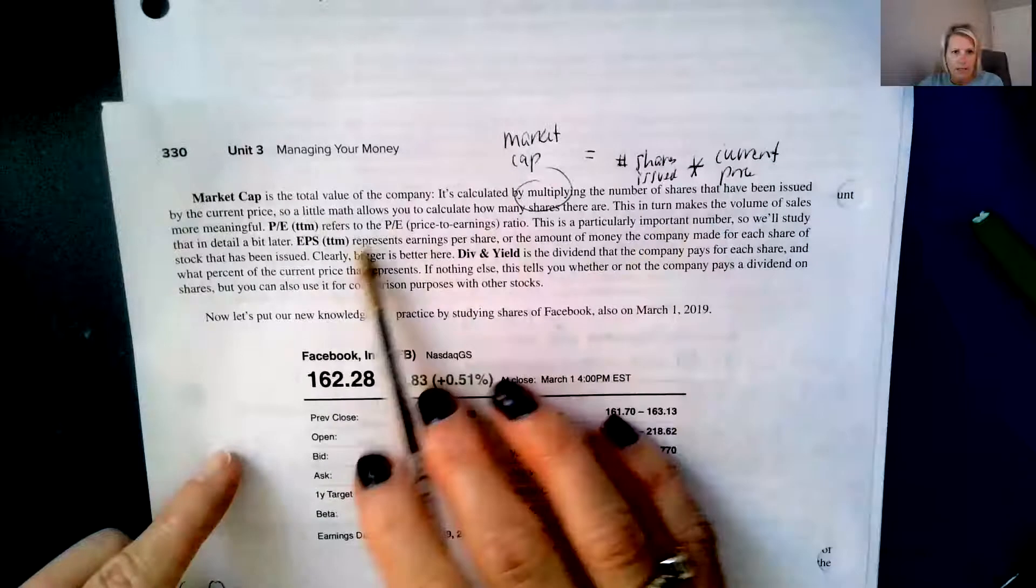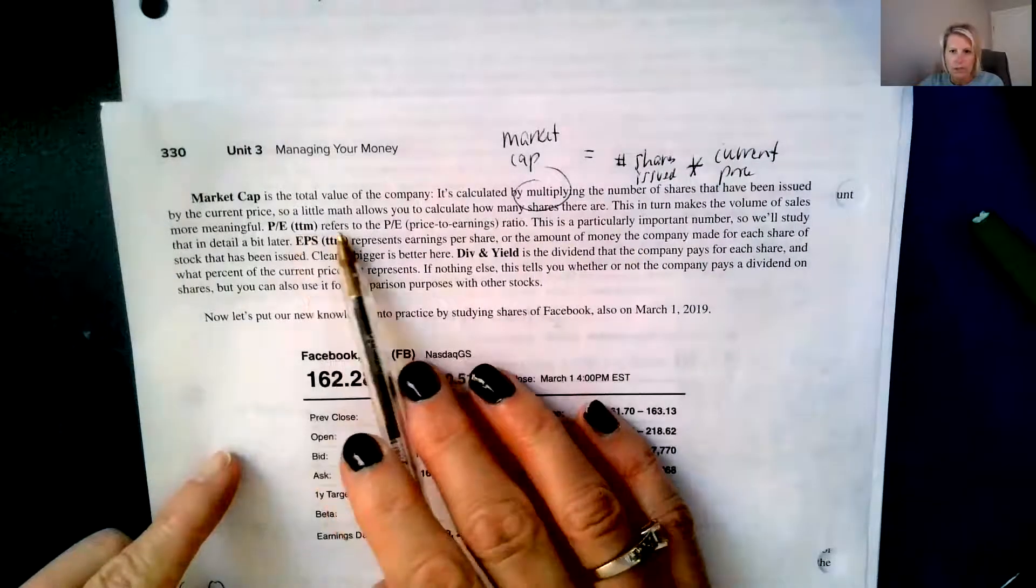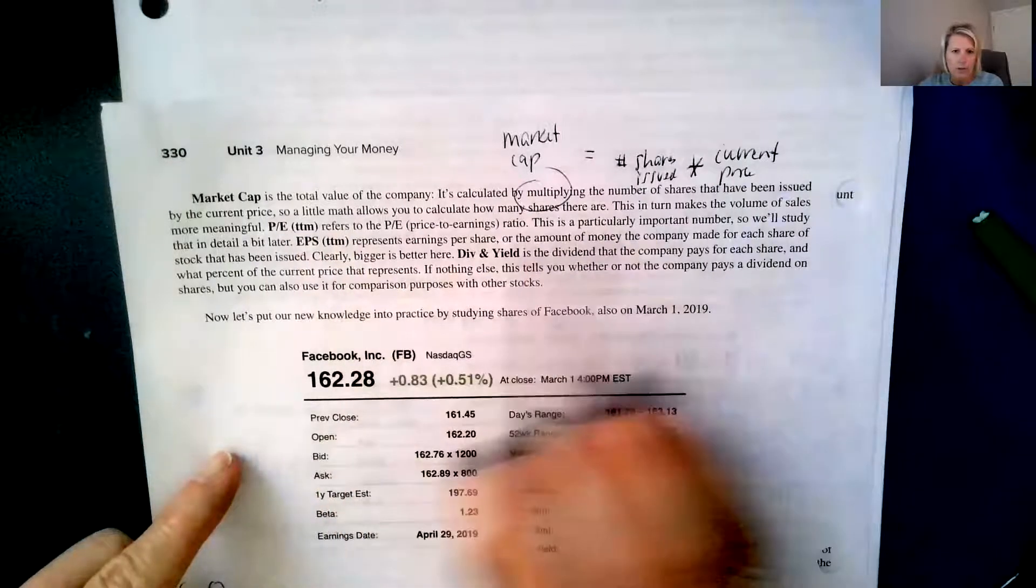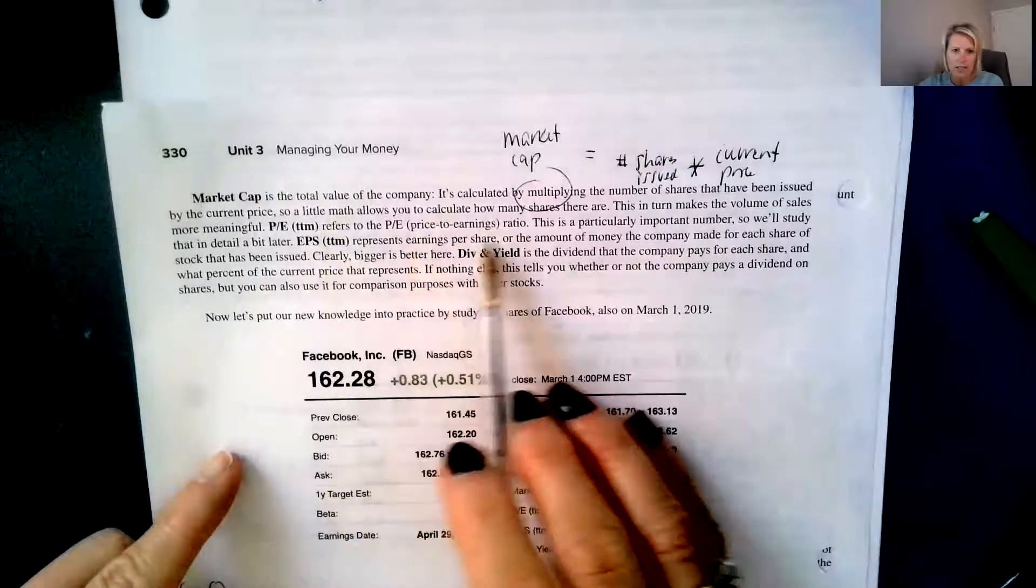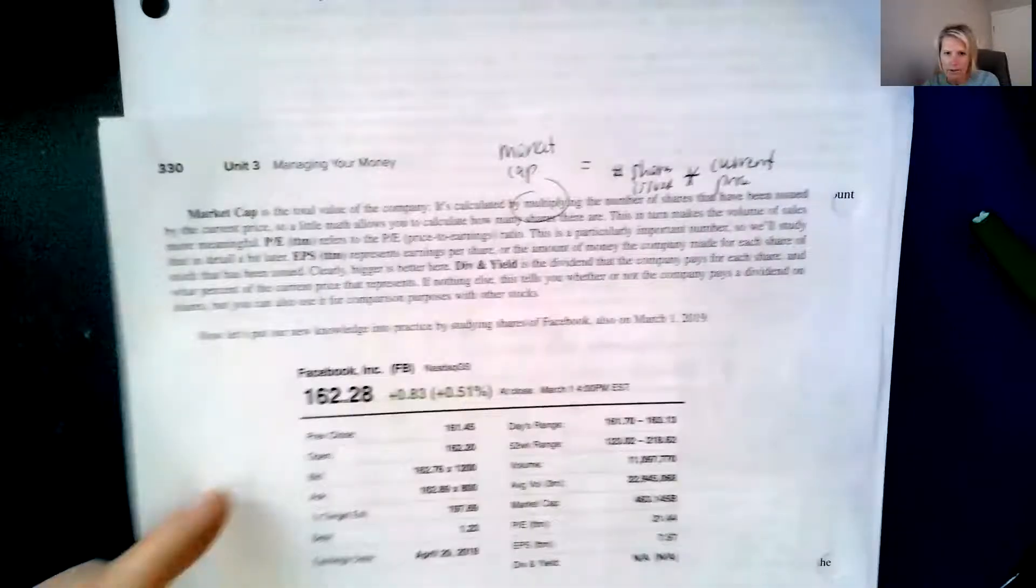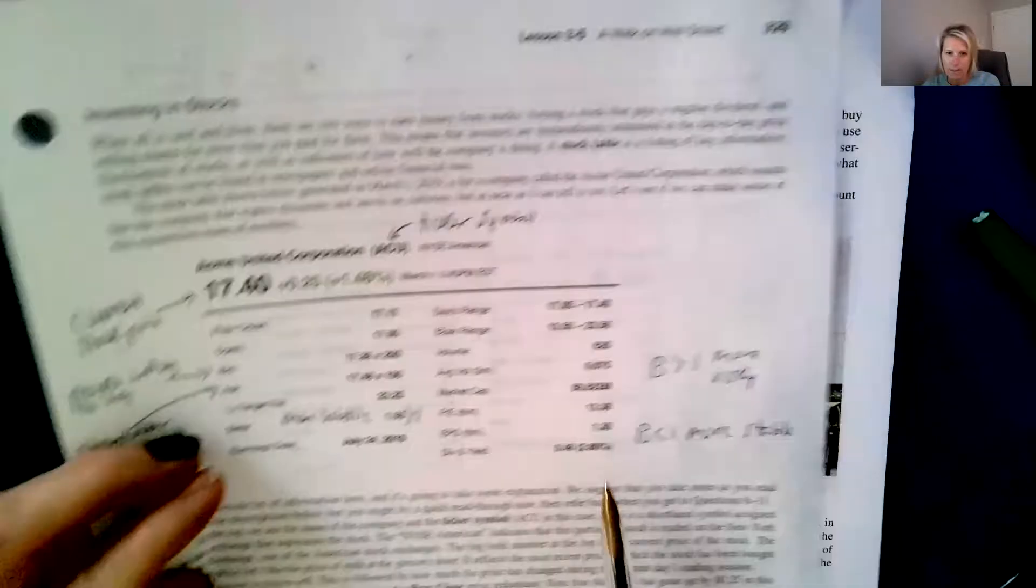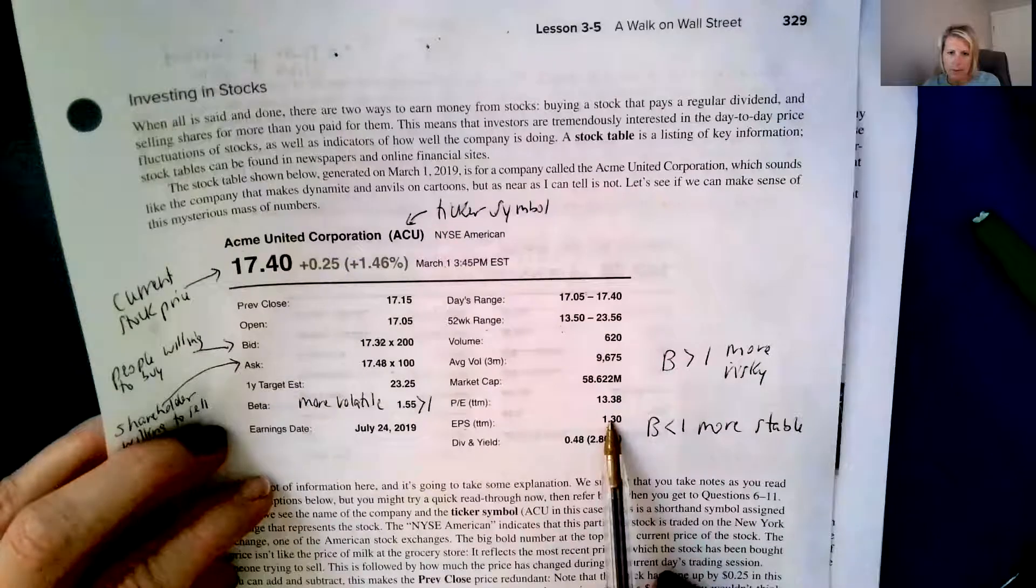The PE is we call that the PE ratio. This is particularly important number. So we'll say that a little bit later. And the EPS represents earnings per share or the amount of money the company made for each share of stock that has been issued. So this one had an earnings per share of $1.30. So for every stock issued, they earned $1.30.